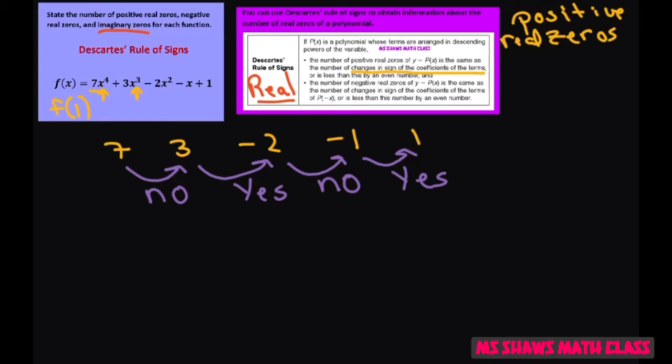So according to this, we have two real positive zeros or less than this by an even number. So it could be 2 or 0. Now for the negative reals.